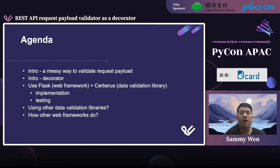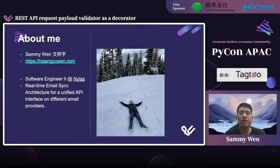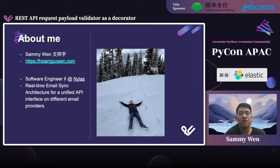But first of all, I'll introduce myself. My name is Sammy Wen. I'm currently a software engineer in an API company called Nylas, which is creating a communication platform as a service. I'm mainly working on our real-time email sync architecture for our unified API interface among different email providers, such as Google, Microsoft, and IMAP protocol. The code I'm showing today is not that similar to what our company does, but I'm mostly taking email object creation and account creation as examples.